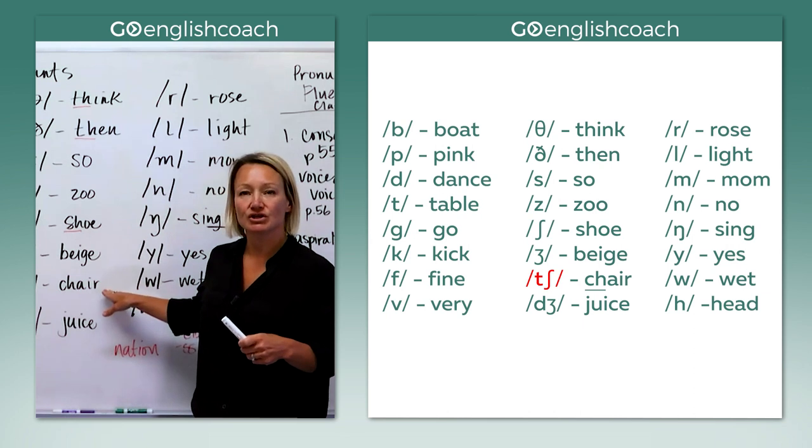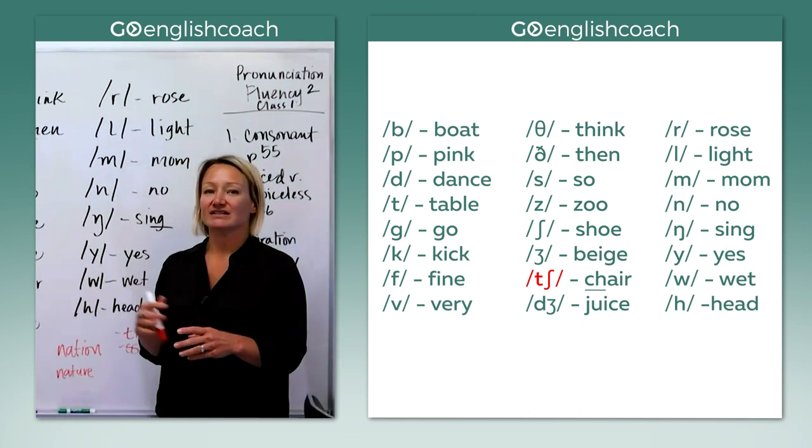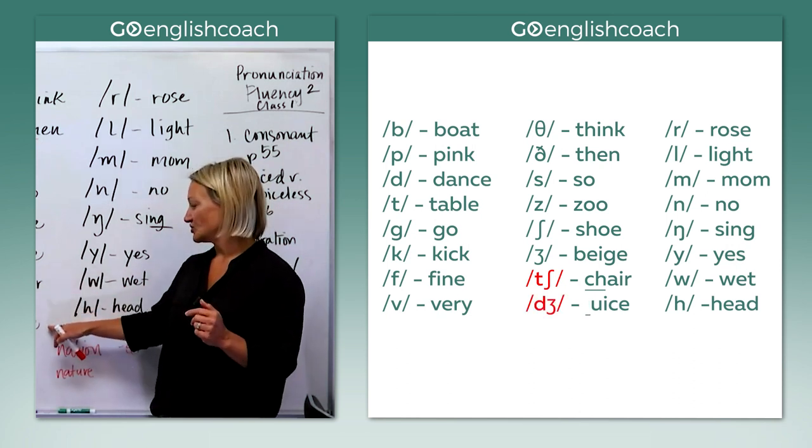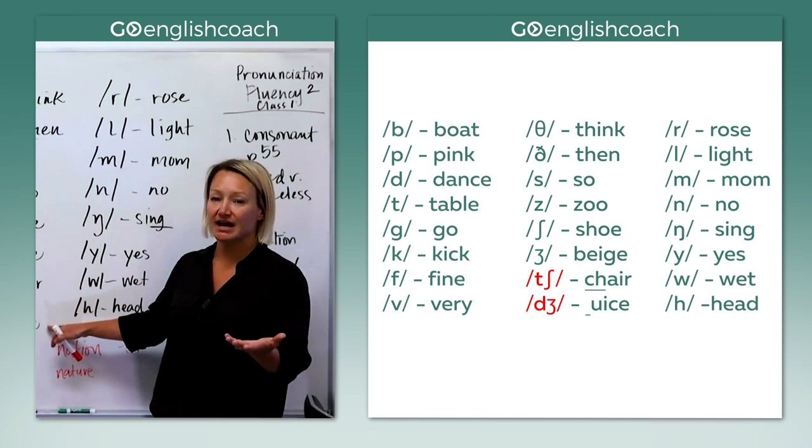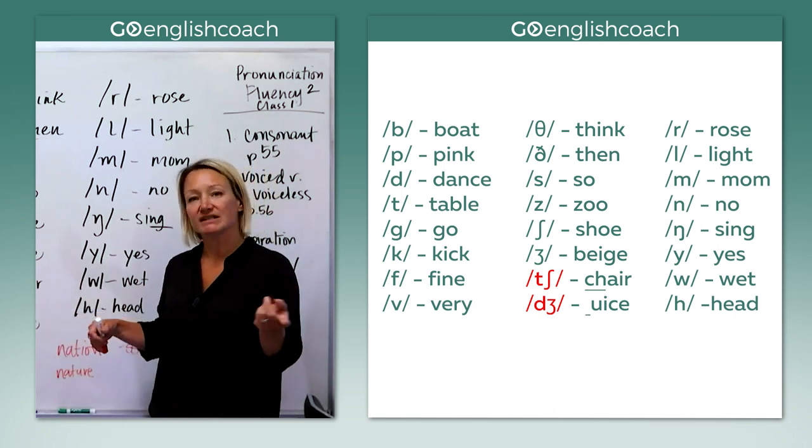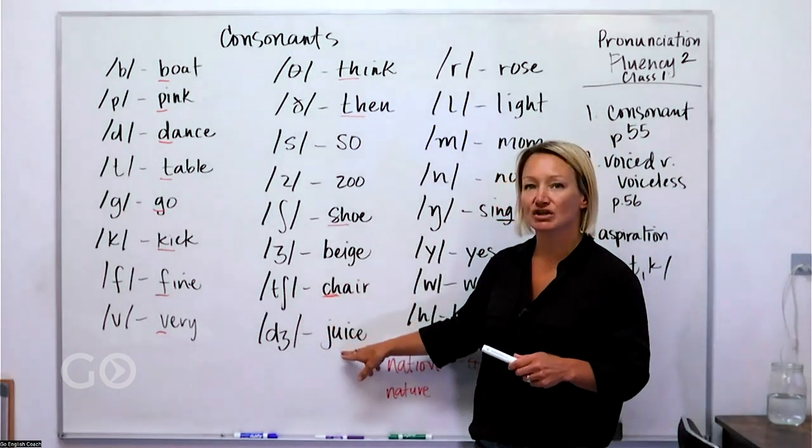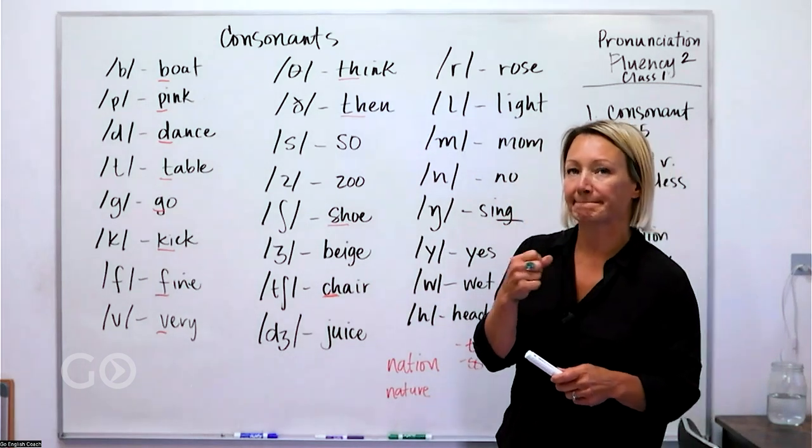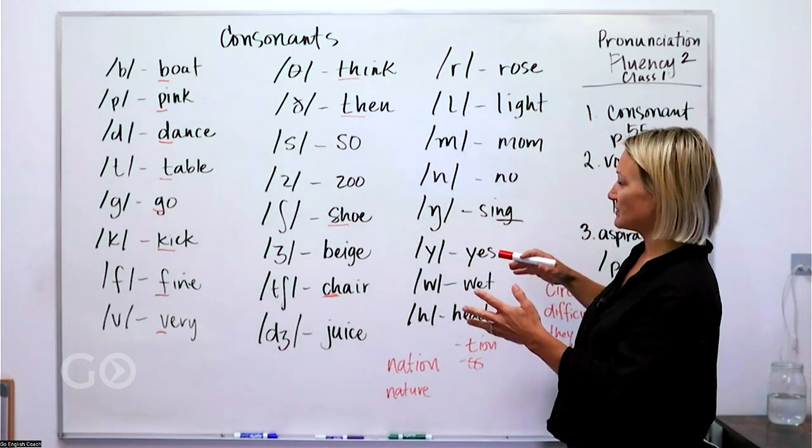And then we have here chair, this is the CH sound in English. Chair, and then we've got juice. So it's the J sound but sometimes we have it with G or DG, but just know that these two, the CH and J come from the same place in the mouth as well.